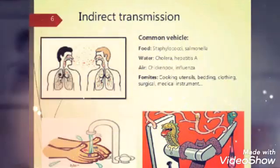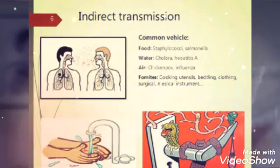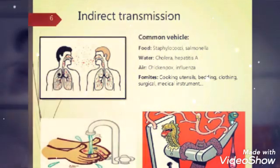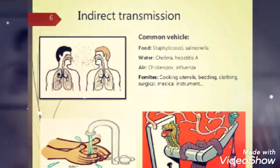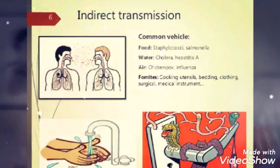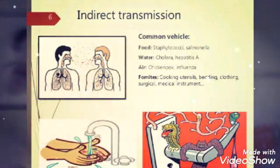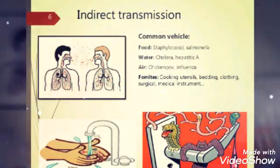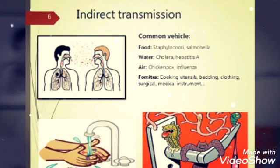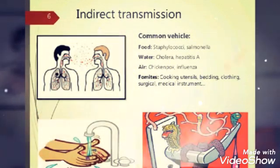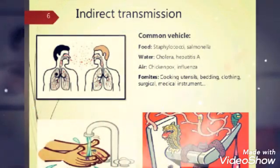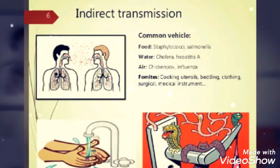Indirect transmission means through any medium. Common vehicles are food, water, air, and fomites. Regarding food — staphylococcal infections — it is always advisable not to eat roadside food in order to protect from infection; eating healthy home-made food is recommended because there are chances of getting indirect transmission through roadside food. Water can carry cholera and hepatitis. Air can carry chickenpox and influenza. Fomites like cooking utensils, bedding, clothing, and surgical and medical instruments are articles where bacteria sit and grow, and whenever we contact those bacteria they transfer from those objects to human beings.